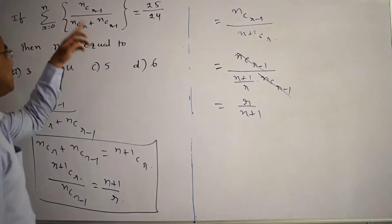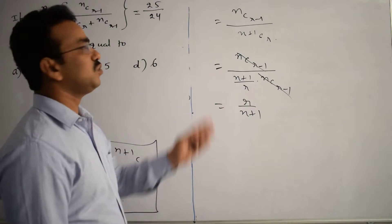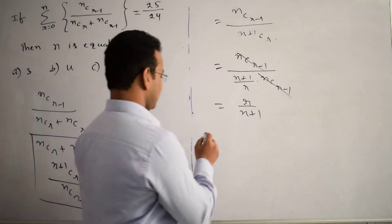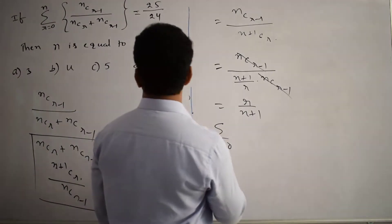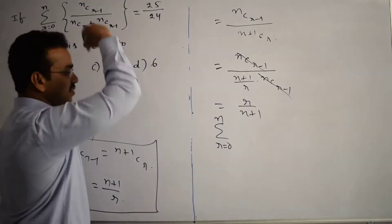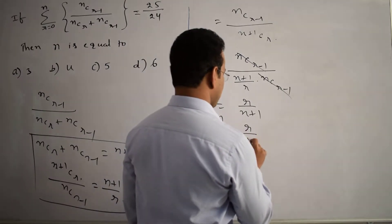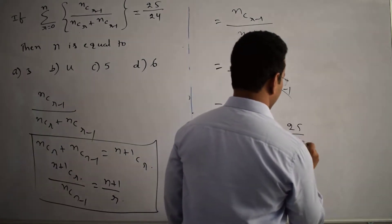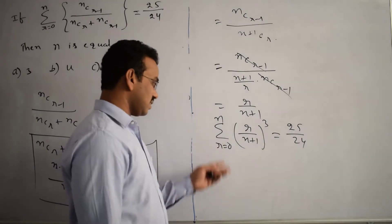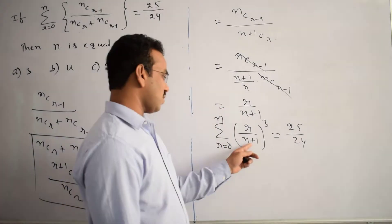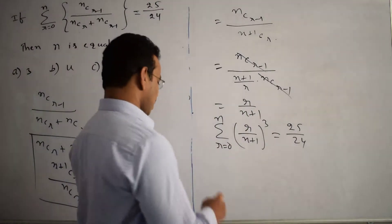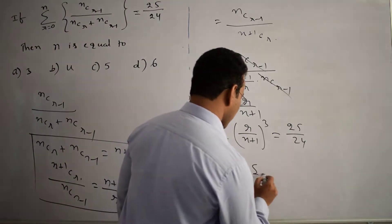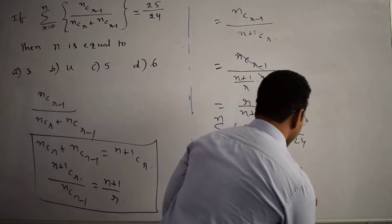Now we calculate the entire summation: summation R equals 0 to N of (R divided by N+1) cubed equals 25 by 24. Since the summation runs over R and not N, the term 1/(N+1) cubed is a constant. What remains inside is summation of R cubed, equaling 25 by 24.